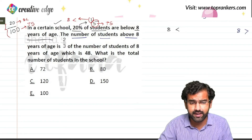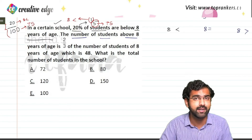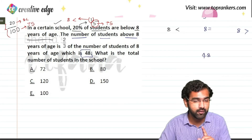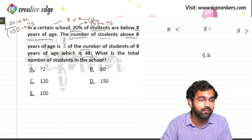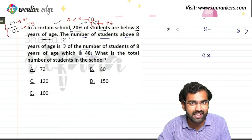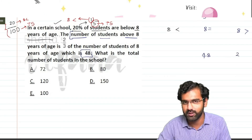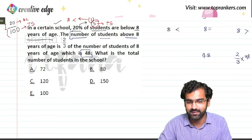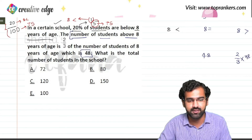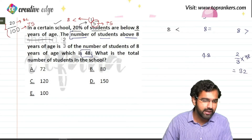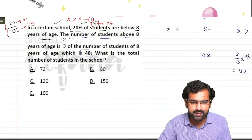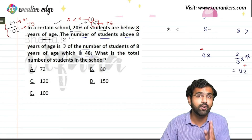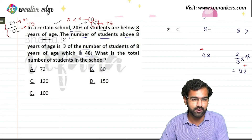There is a third category: students who are exactly 8 years old, and the number of students who are exactly 8 years old is 48. Additionally, the number of students above 8 years of age are two-thirds of the students who are exactly 8 years old. So students above 8 are two-thirds of 48. One-third of 48 is 16, so two-thirds is 32. I now have two values on the actual scale: students of exactly 8 years = 48, and students above 8 = 32.